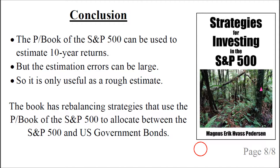The talk was based on this book, which has rebalancing strategies that use the price-to-book ratio to allocate between the S&P 500 and US government bonds. You can click on the image or the link below the video.